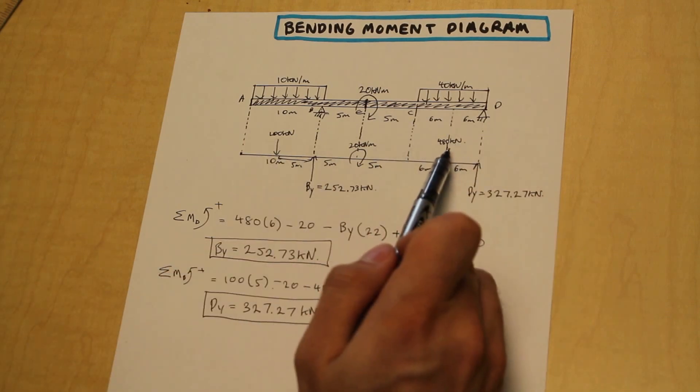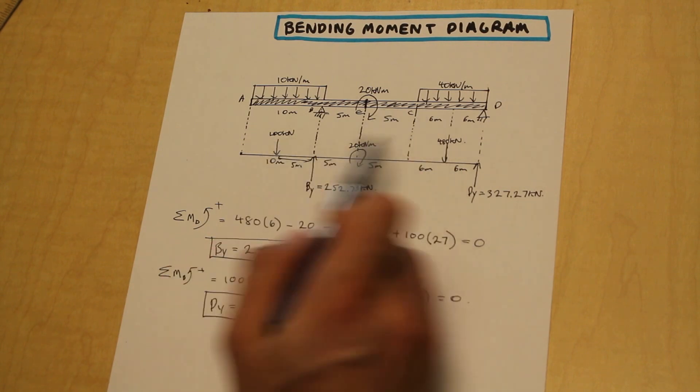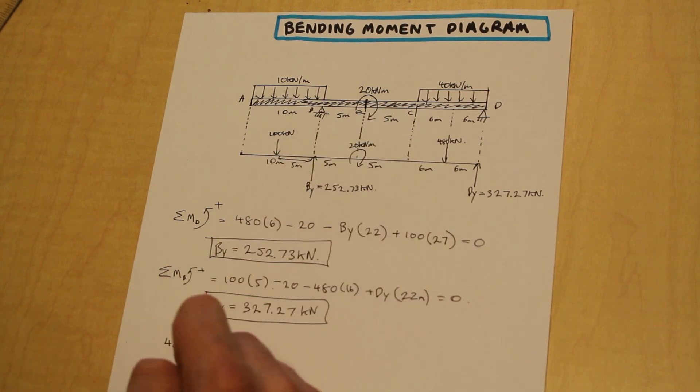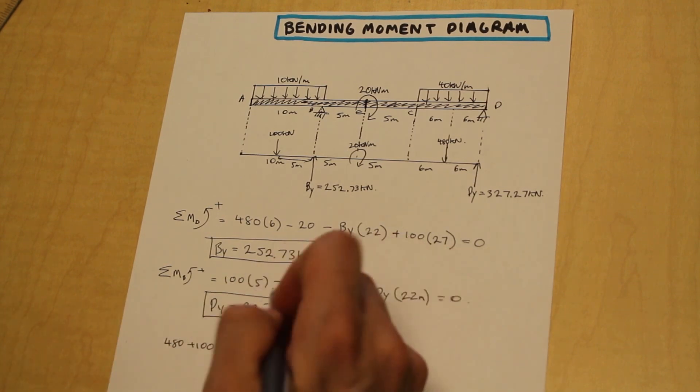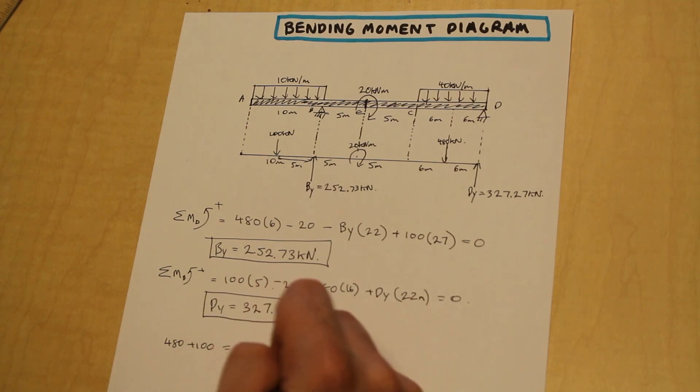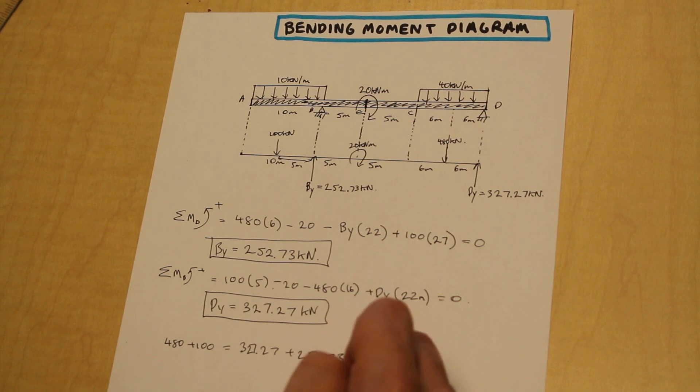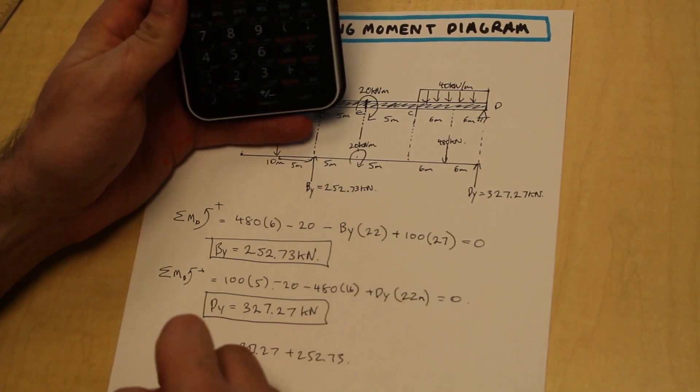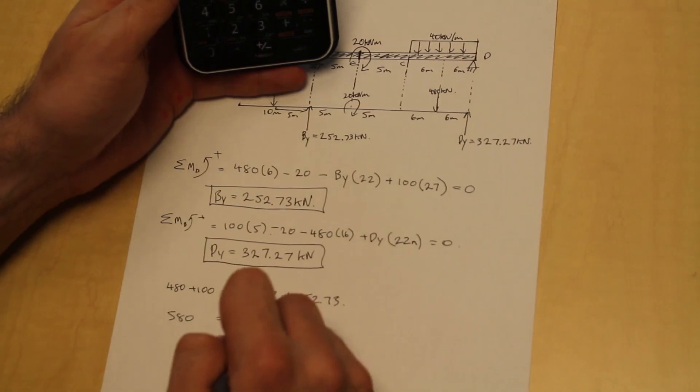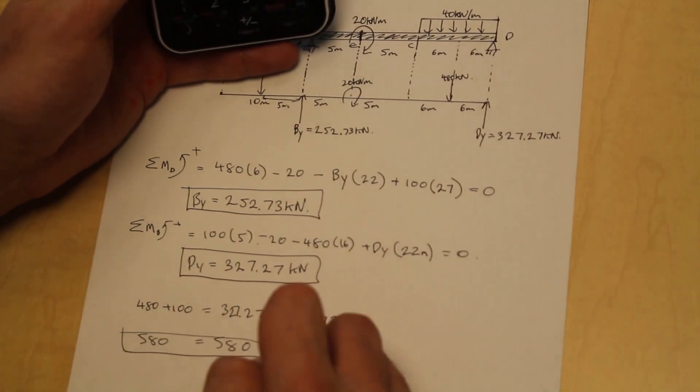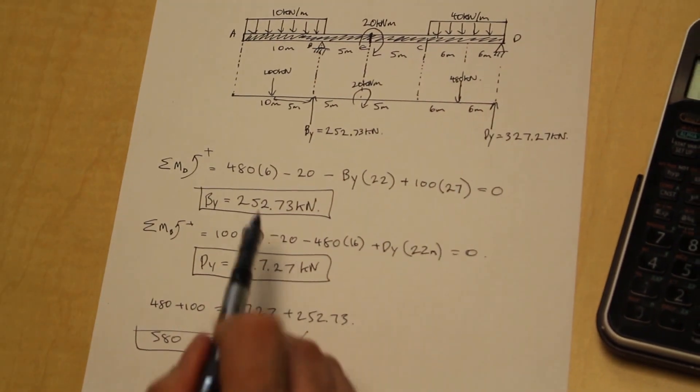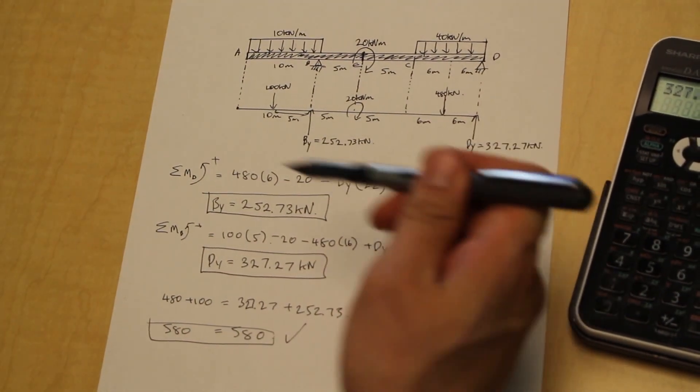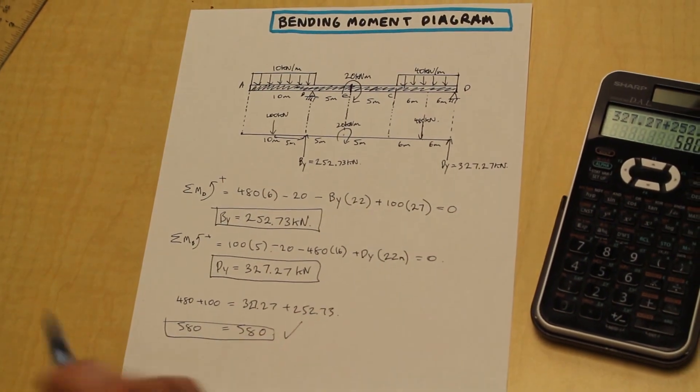All we have to do is a very simple check. Let's look at our free body diagram and add the external forces acting. We have 480 plus 100 kN, and that should be equal to the sum of BY and DY. So we have 327.27 plus 252.73. I'm just going to get my calculator out here to double check, and as we see, 580 is equal to 580. That is correct, and that's a good check. Now we know that our reactions are correct, and we can continue on to the next part of the question, which is going to be drawing the bending moment diagram.